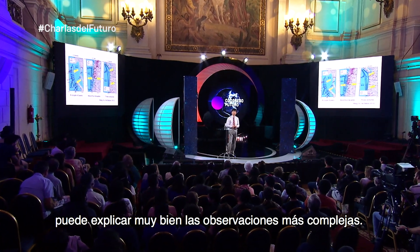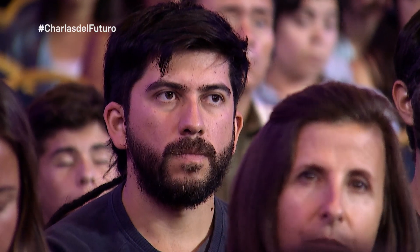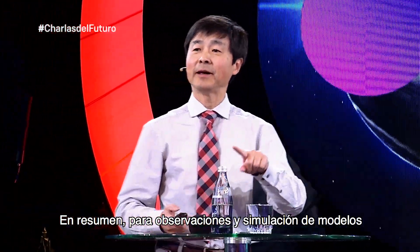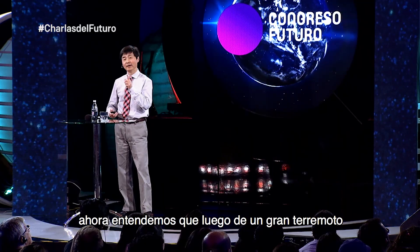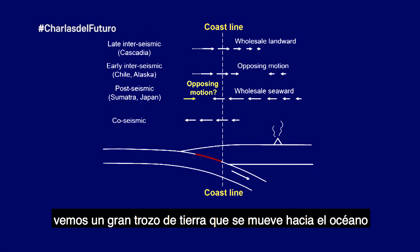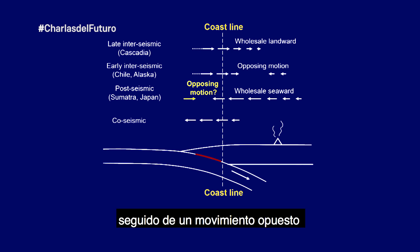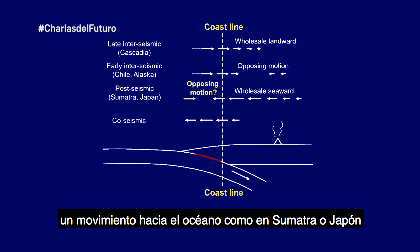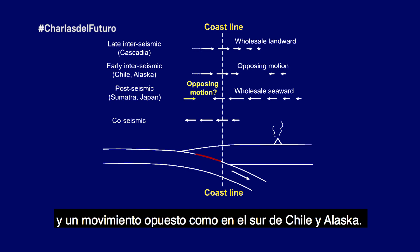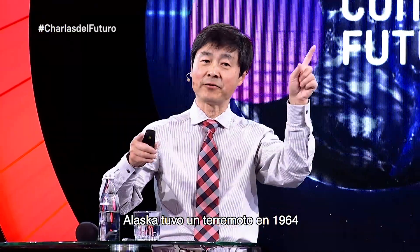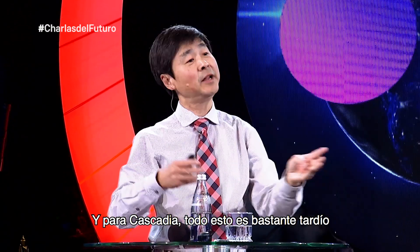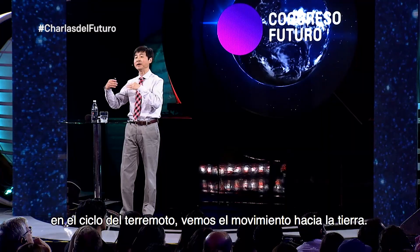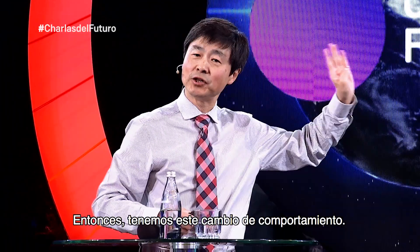In summary, from observations and modeling, we now understand that after a large earthquake, we see a wholesale seaward motion, followed by opposing landward motion—as seen in Sumatra and Japan today—and then seaward motion as seen in southern Chile and Alaska, which had an earthquake in 1964. For Cascadia and many other subduction zones late in the earthquake cycle, we see everything moving landward.